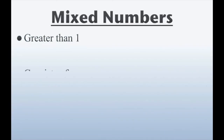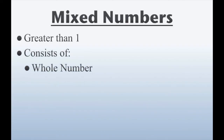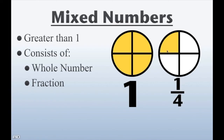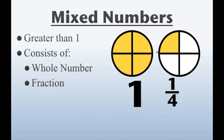Mixed Numbers. First of all, what exactly are mixed numbers? Well, mixed numbers have a value that's greater than 1. They consist of a whole number and a fraction — that's what makes them look a little bit different. For example, here we have four pieces and all of them are shaded, that's one whole. Here we have four pieces and only one is shaded, and that makes it 1 fourth. So together, this makes a value of 1 and 1 fourth.